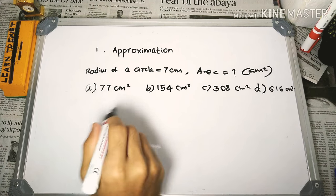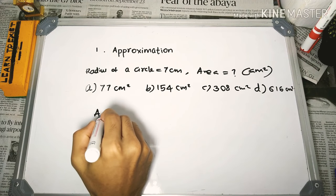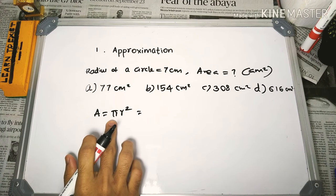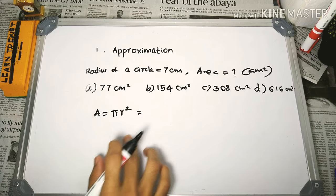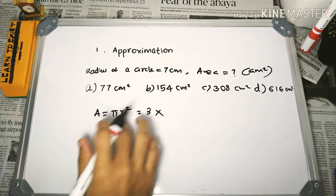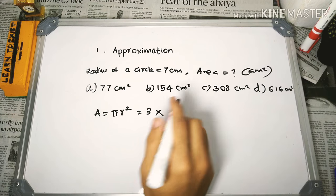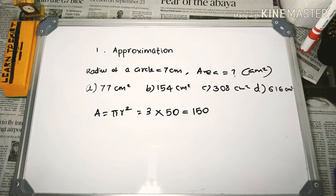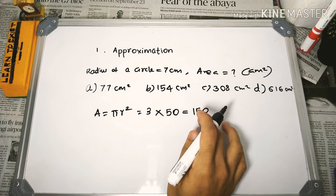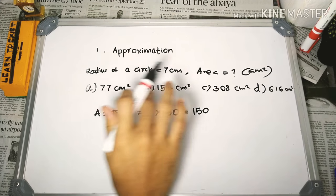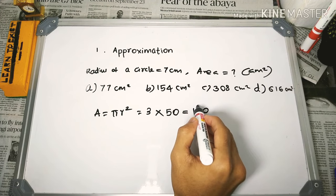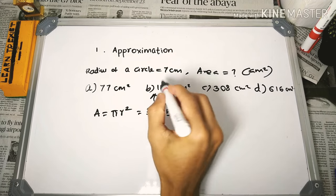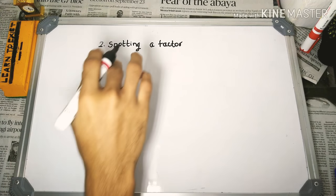The area of a circle is A = πr². π is approximately 3.14, and r² = 7² = 49, which is approximately 50. So the area is approximately 3.14 × 50 = 150. Looking at the answer choices, 154 is approximately 150, so 154 is the correct answer.